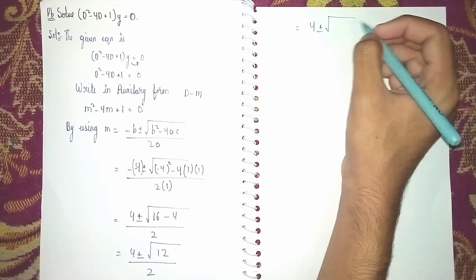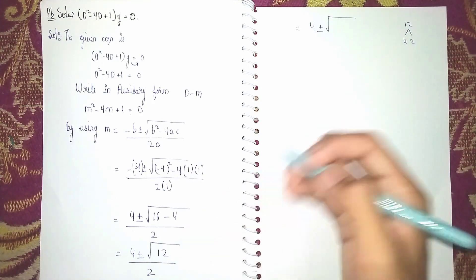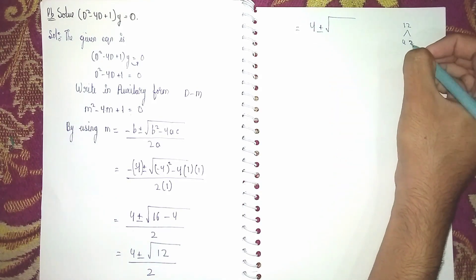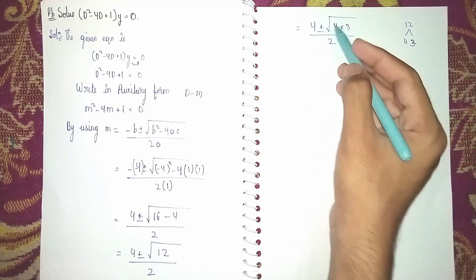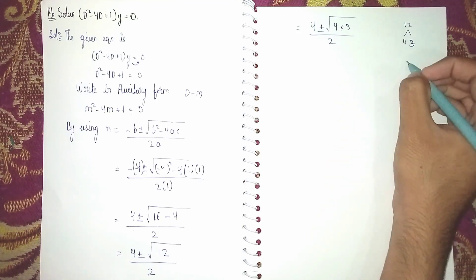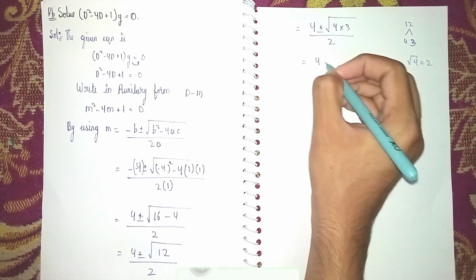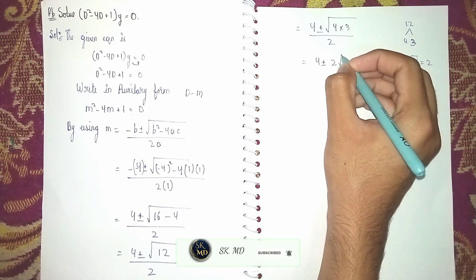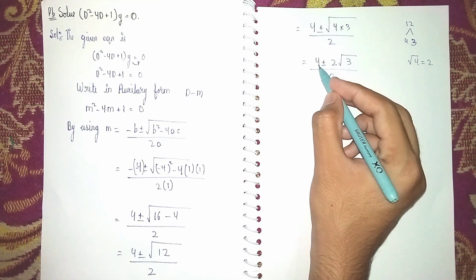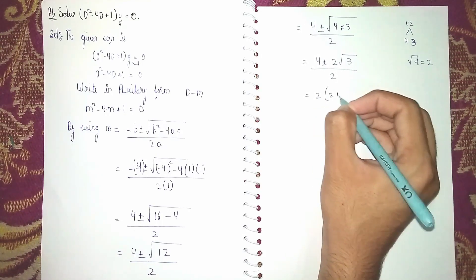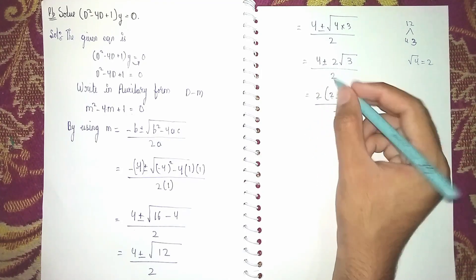We can write 12 as 4 × 3, since we don't have a perfect root of 12. So √12 = √(4 × 3) = 2√3. Therefore m = (4 ± 2√3) / 2. Taking 2 as common in the numerator: 2(2 ± √3) / 2, which simplifies to 2 ± √3.